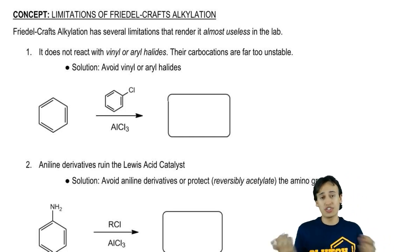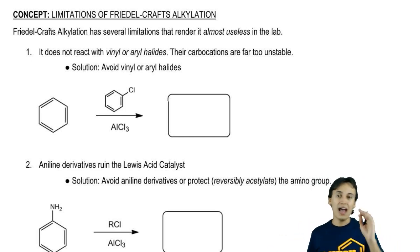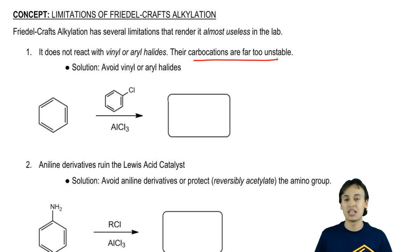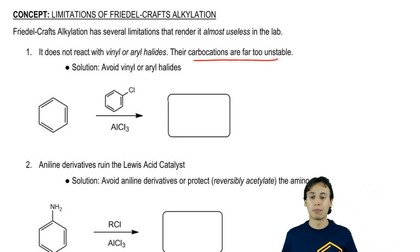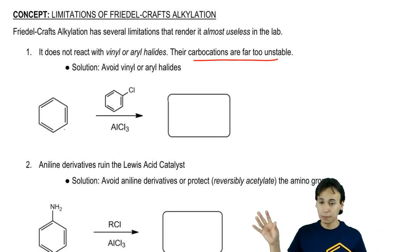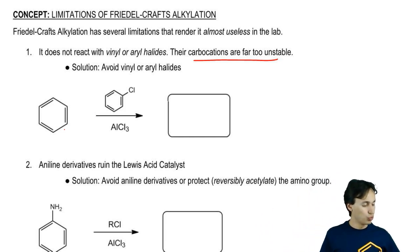The first limitation just makes sense. It doesn't react with vinyl or aryl halides. If you have a halogen directly on a double bond, that carbocation is going to be far too unstable. For example, if I have benzene reacting with chlorobenzene and AlCl3, the first step would be that the chlorine bond gives its electrons to the aluminum, and I wind up getting a carbocation.